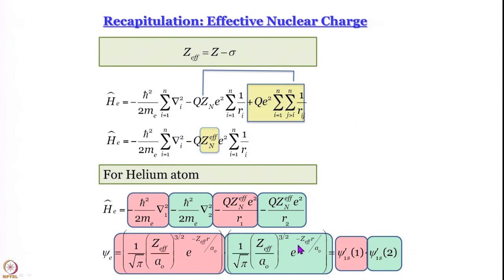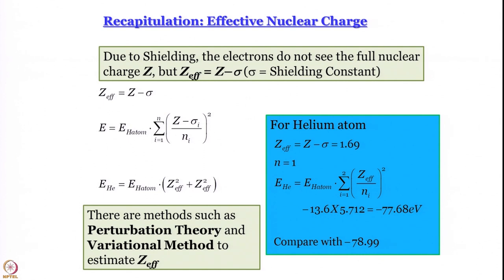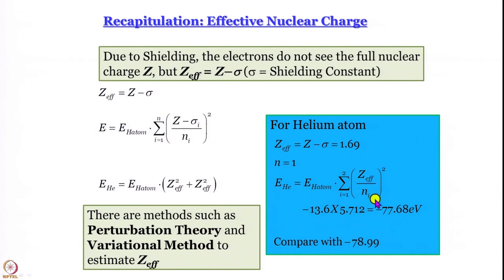This is how we formulated the Hamiltonian and wrote the wave function. We did a quick fact check and saw that for the helium atom, when we work with Z-effective, we get a theoretical value of energy close to the actual experimental value. The theoretical value is more positive than the experimental value, which is the real value.